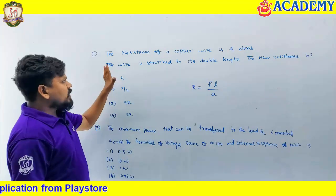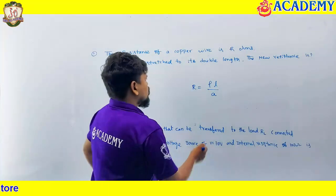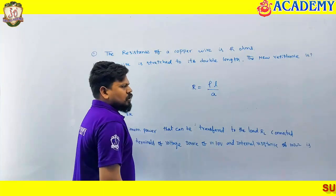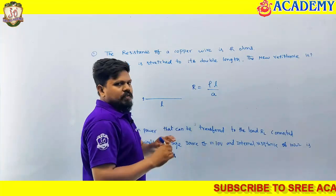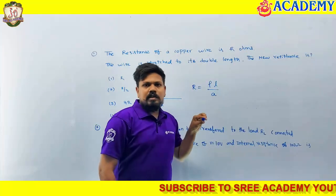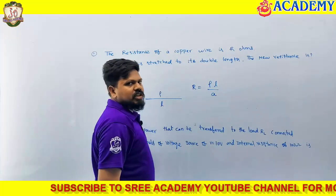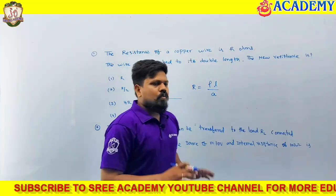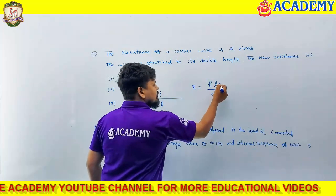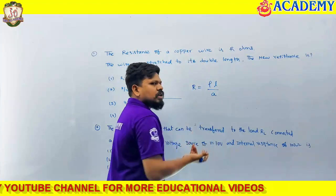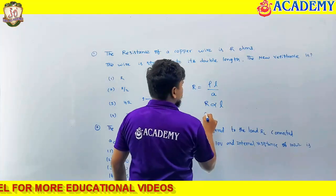What they have given? A copper wire is there. Generally resistance means copper wire or aluminum wire only we will consider. Length — whatever is the length of this wire that is nothing but L. Area — whatever you are seeing, that is the area of cross section. Resistivity rho is nothing but a material property. The length of this wire is stretched to double. Whenever length is doubling, resistance also becomes double, because R is directly proportional to L.